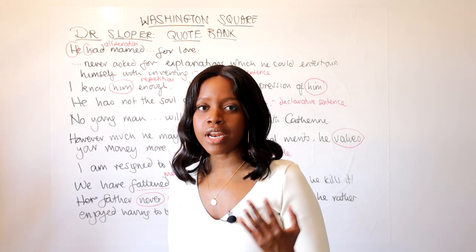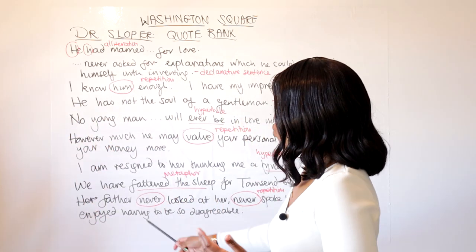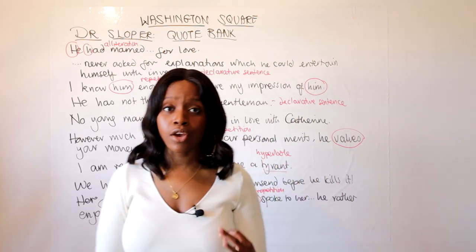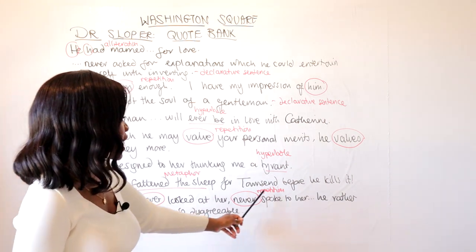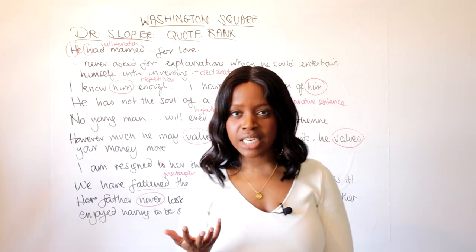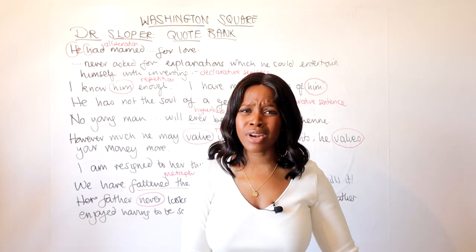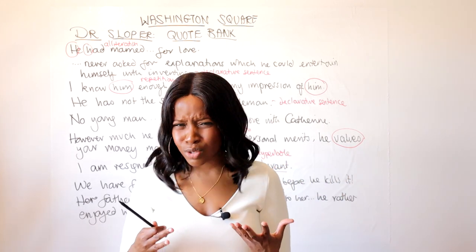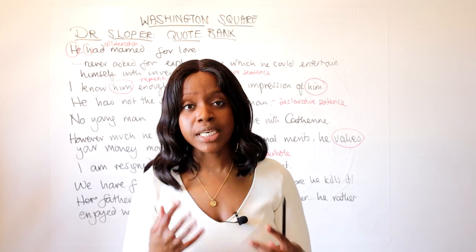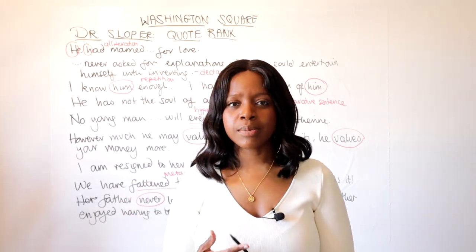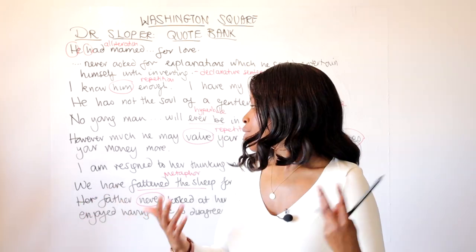The next quotation: when Dr. Sloper realises Katherine is dead set on marrying Maurice, he says, 'We have fattened the sheep for Townsend before he kills it!' This exclamatory sentence shows strong emotion. The reference to Katherine as a 'sheep' is a metaphor, suggesting she cannot think for herself — again insulting her. It illustrates Dr. Sloper's awareness of Maurice's mercenary intentions: he's prepared her with money only for Townsend to squander it.